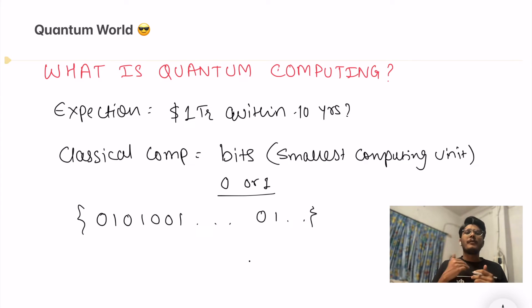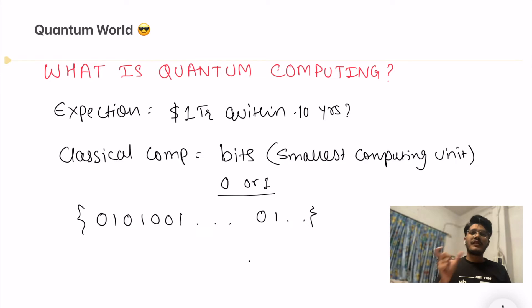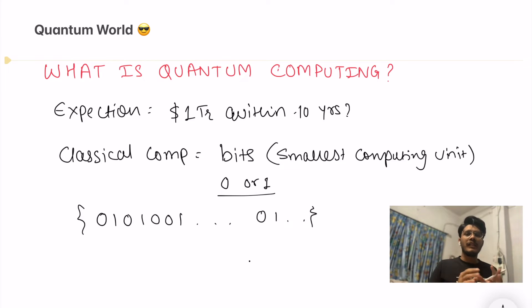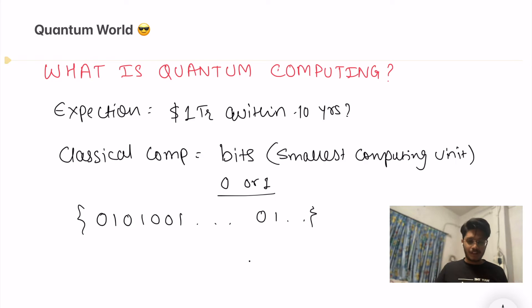If you want to solve any complex problem, this stream gets bigger and bigger, and that is where the problem lies — as your stream grows, your computation demand grows too. For example, one quantum computer built by Google solved a particular problem in just four minutes, which a classical computer would take 10 years to solve.